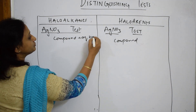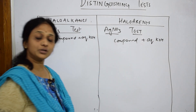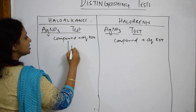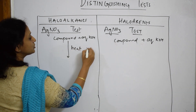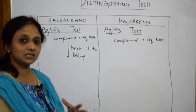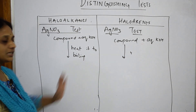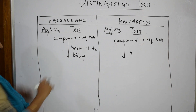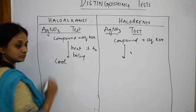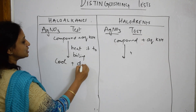To each compound you are going to add aqueous KOH. Then you are going to heat it to boiling. Once you heat it to boiling, you cool the solution.